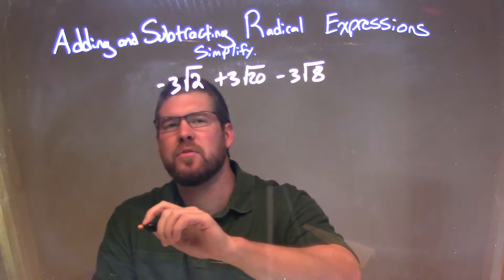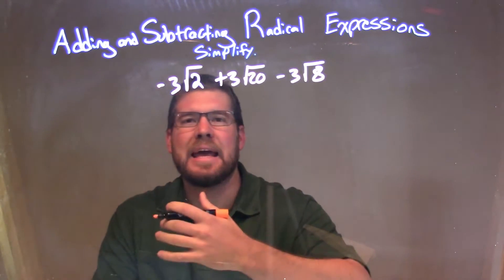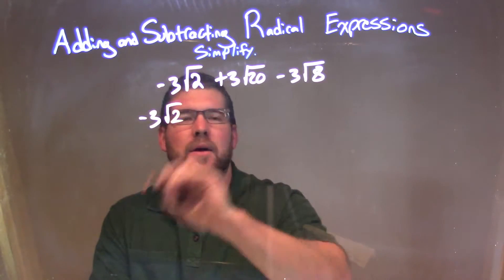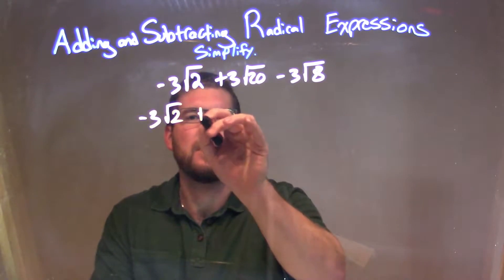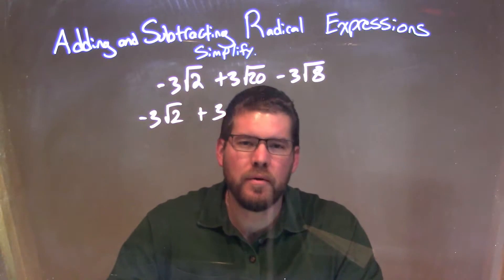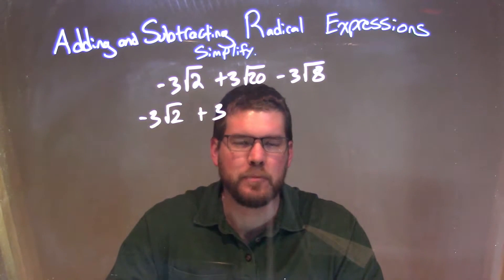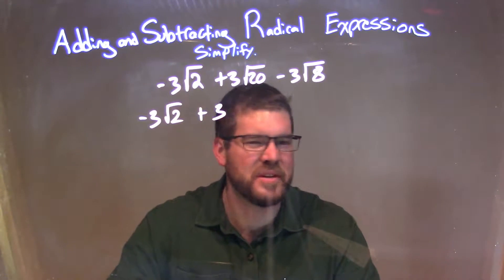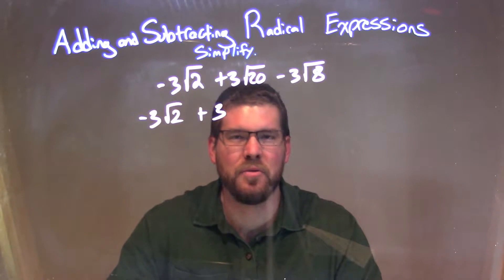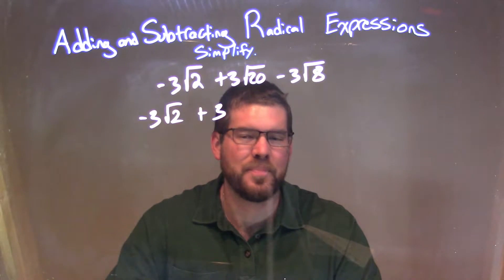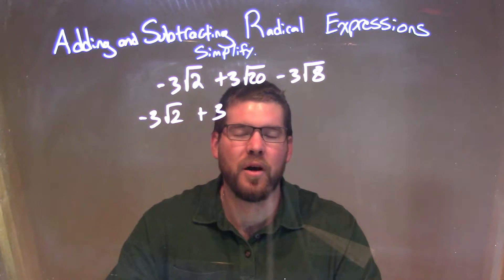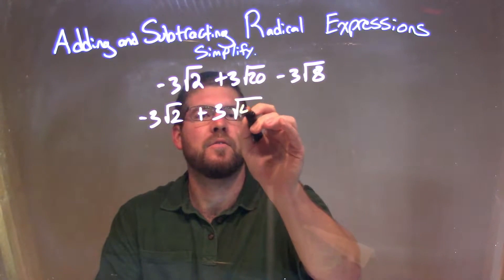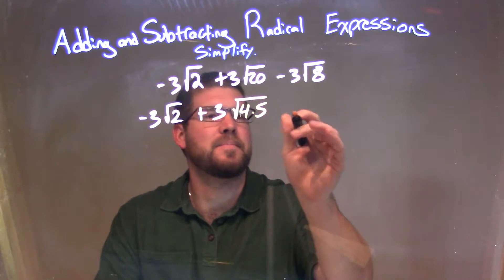So negative 3 square root of 2, I can't really break down anymore, so that's negative 3 times the square root of 2. For the square root of 20, I know 20 can break down as 2 and 10, but I can't take the square root of those, but I can take the square root of 4. Since the square root of 4 times 5 is 20, I'm going to break this apart to be 4 times 5.